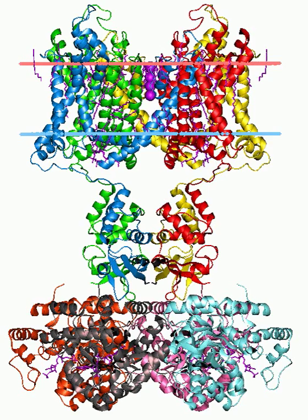Voltage-gated potassium channels are transmembrane channels specific for potassium and sensitive to voltage changes in the cell's membrane potential. During action potentials, they play a crucial role in returning the depolarized cell to a resting state.